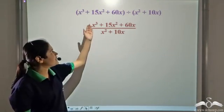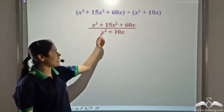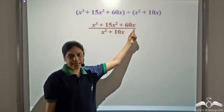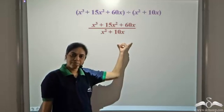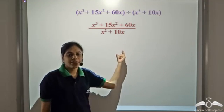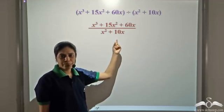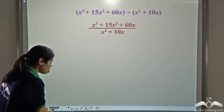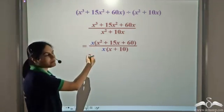We have these two expressions and we need to divide x cubed plus 15x squared plus 60x by x squared plus 10x. The first step is to factorize these two and cancel out the common factors. From the numerator and denominator, we can take x as a common factor.